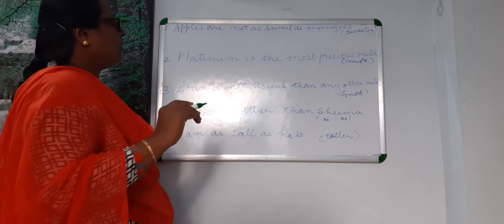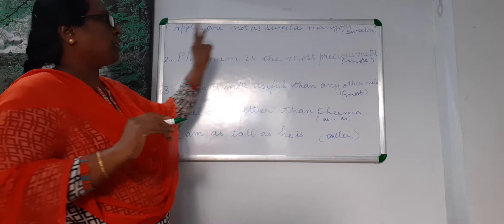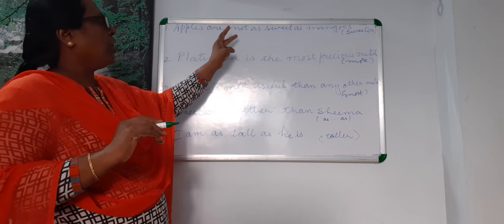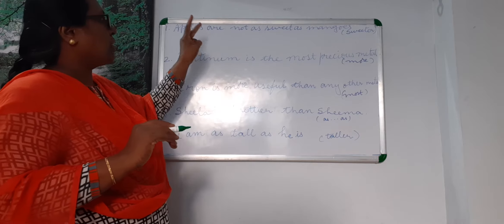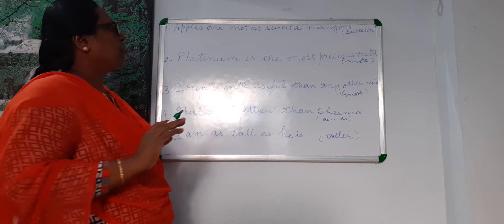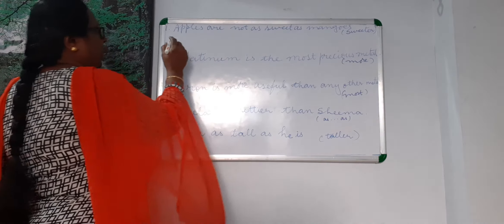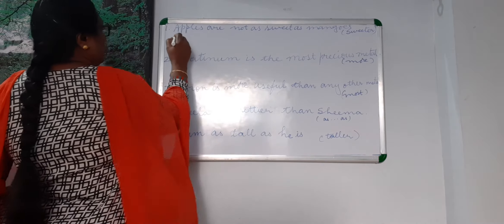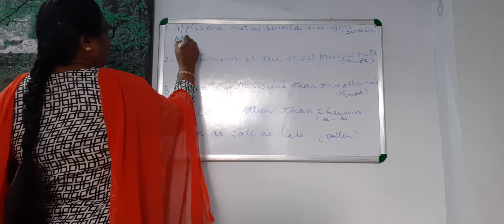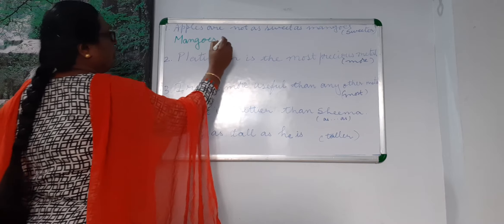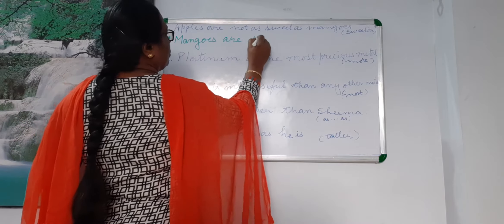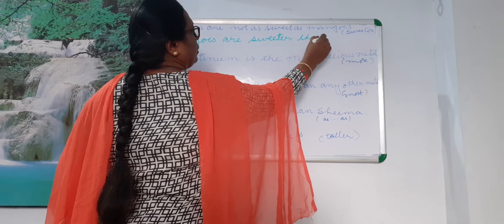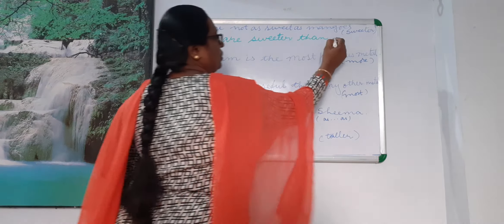Here the comparison is between two things only — apples and mangoes — so you cannot write it in superlative form. This sentence says that mangoes are sweeter, so you will write: mangoes are sweeter than apples. The answer will be: mangoes are sweeter than apples.